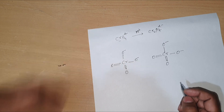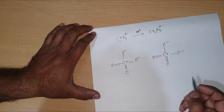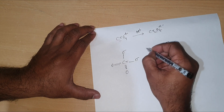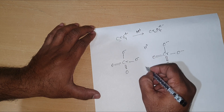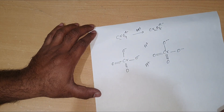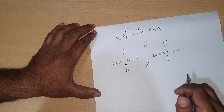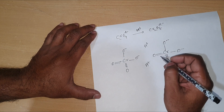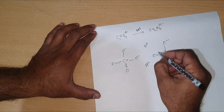Now I am going to add acid, represented by H⁺. I am going to put two H⁺ ions. Since we are adding acid, there are many H⁺ ions present; I have taken two of them for my explanation.